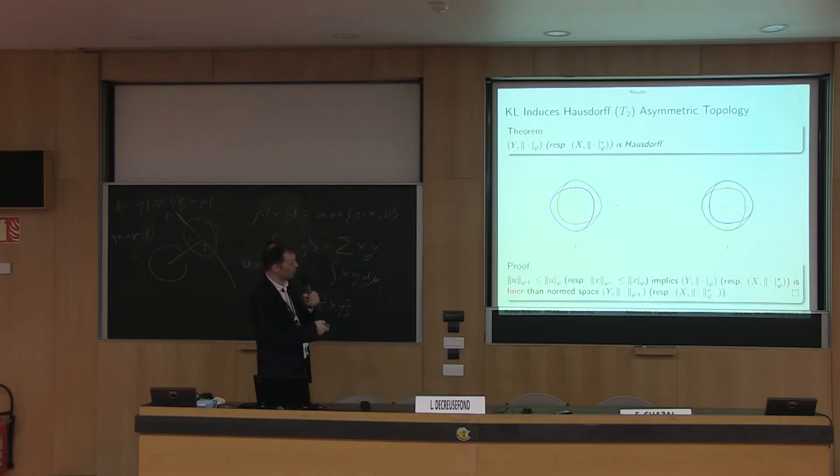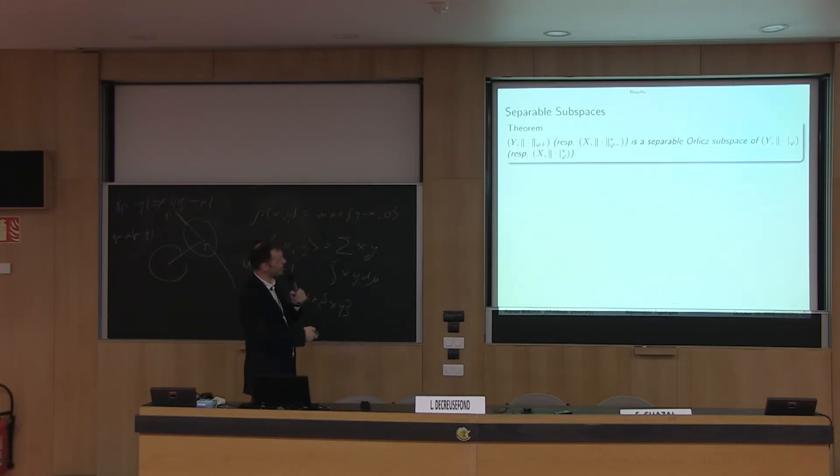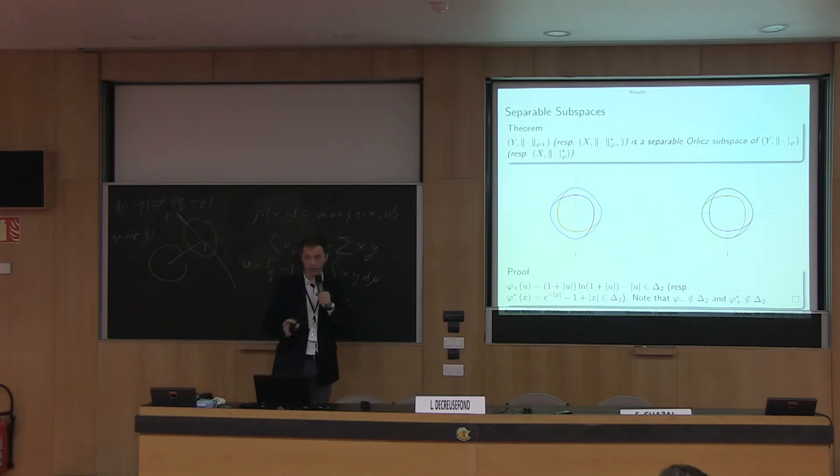Results are the following. First of all, Kullback divergence after all induces Hausdorff topology. To see this, we can define for our asymmetric norm a norm that is a lower bound. What it means is that there is a norm topology, and our asymmetric norm topology is finer than the norm topology because of this inequality. That means our topology is also Hausdorff. It has separated neighborhoods. You can also show that this norm space, which has a weaker topology, is in fact a separable Orlicz space.